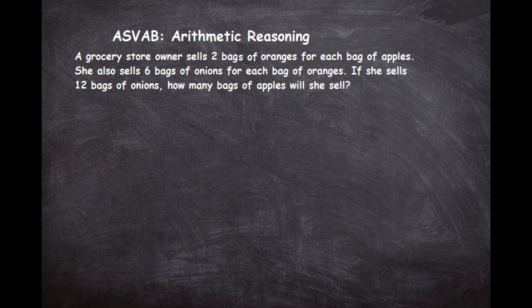Let's jump right into it. It says that a grocery store owner sells two bags of oranges for each bag of apples. She also sells six bags of onions for each bag of oranges. If she sells 12 bags of onions, how many bags of apples will she sell? So we're dealing with three different grocery store items and we're trying to figure out, based on how many of one we sell, how many of another we sell.